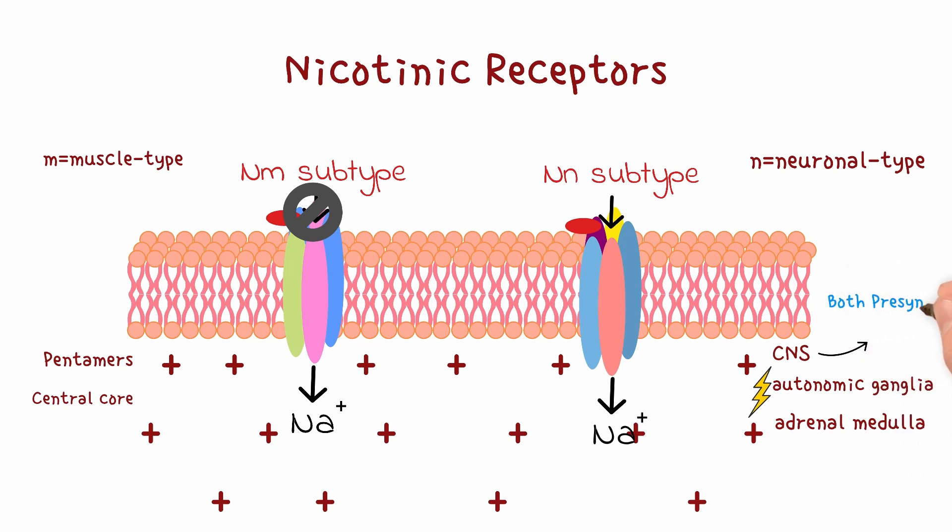In the central nervous system, they are located at presynaptic and postsynaptic neurons in the brain, modulating the release of neurotransmitters like dopamine, glutamate, and GABA.